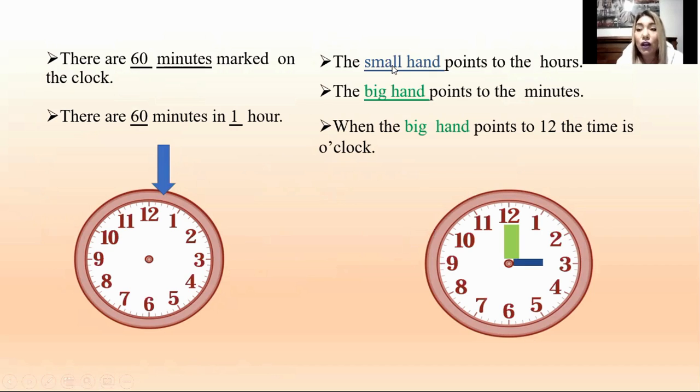We have the small hand, the blue one, and we have the big hand, the green one. The small hand points to the hours. The big hand points to the minutes. But when the big hand points to twelve, the time is o'clock.